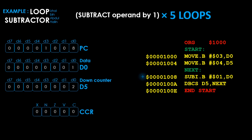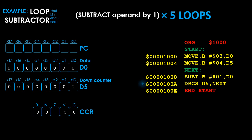The program counter is now pointing back at address 1008. Before the instruction is executed, the program counter must point to the next address. The instruction at address 1008 is executed — it subtracts 1 from D0 and stores the value 0 back in D0. The status register is updated to 00100. The program counter is updated to 1000E before the current instruction executes. When the DBCS instruction is executed, it checks the C flag. Its value is 0, signaling a branch is to be taken. Register D5 is decremented by 1; its new value is 1. This is checked against negative 1. Since it is not the same, the program counter points to label NEXT at address 1008 to complete the branch.